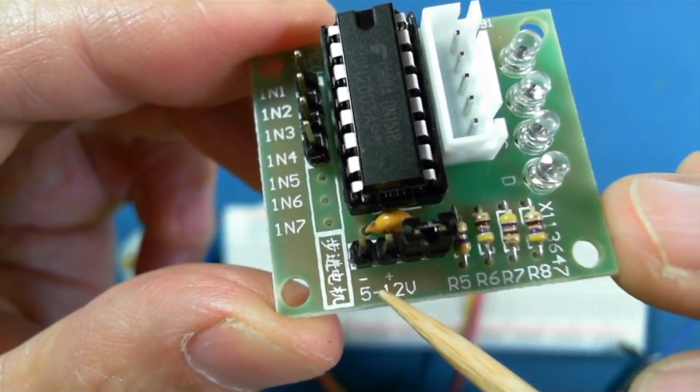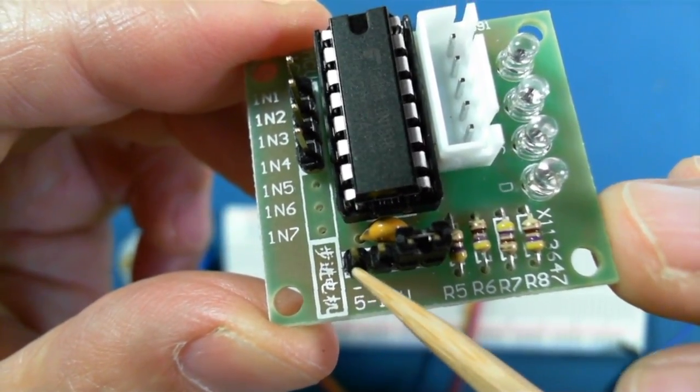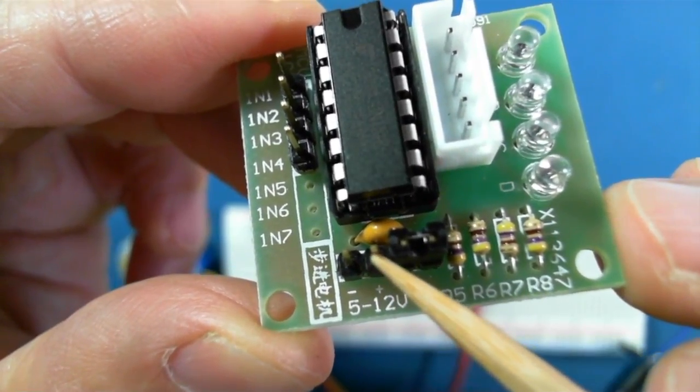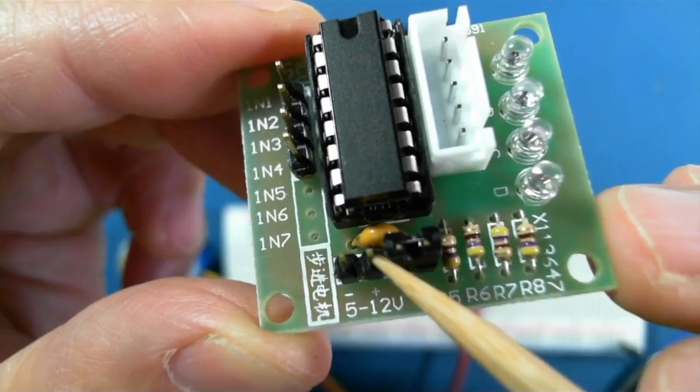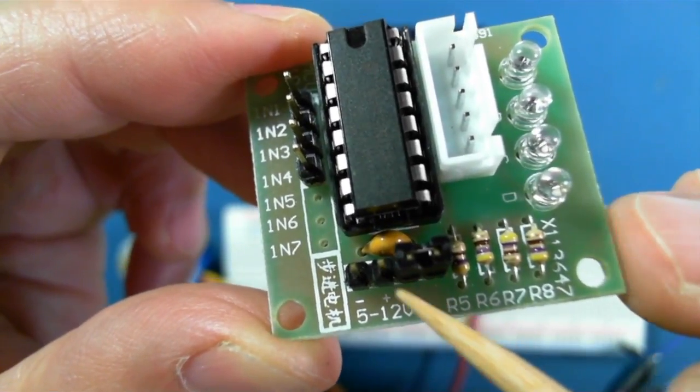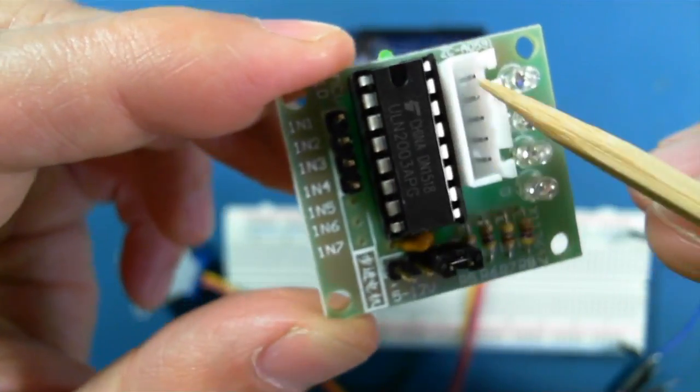It can accept anything from five to twelve volts. This is the minus or the ground. This will be the plus five that we'll get from our plus five pin on the Arduino. The plug goes in here.